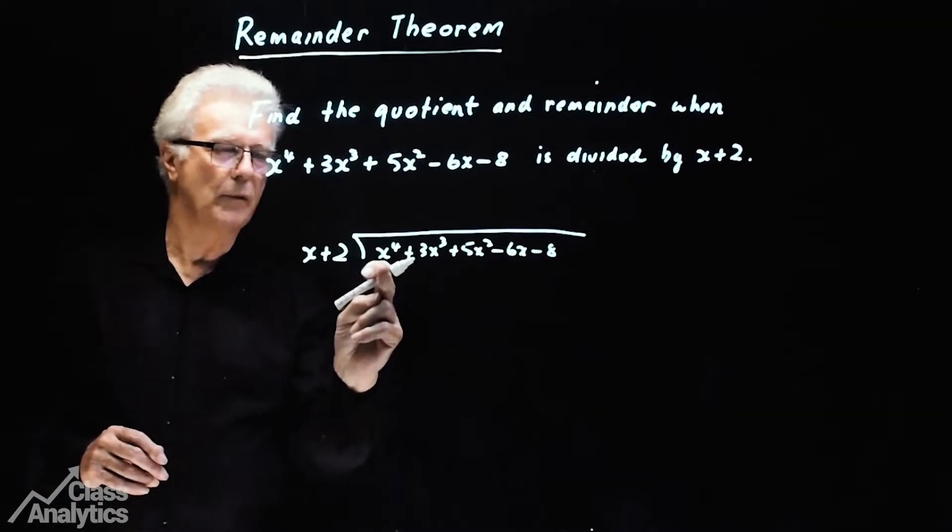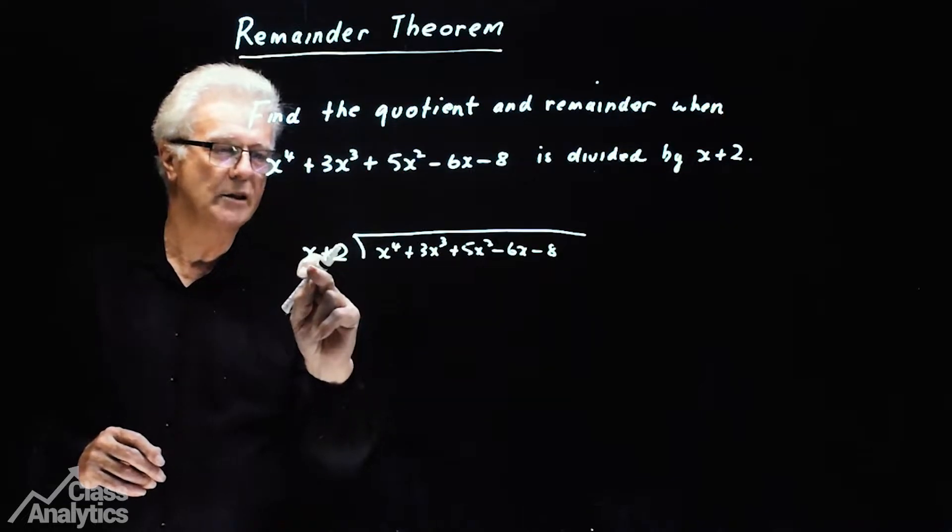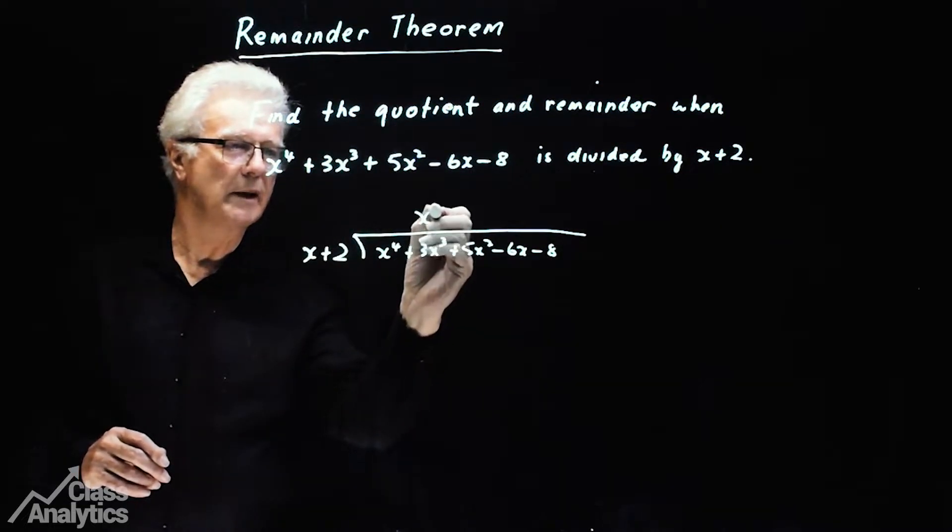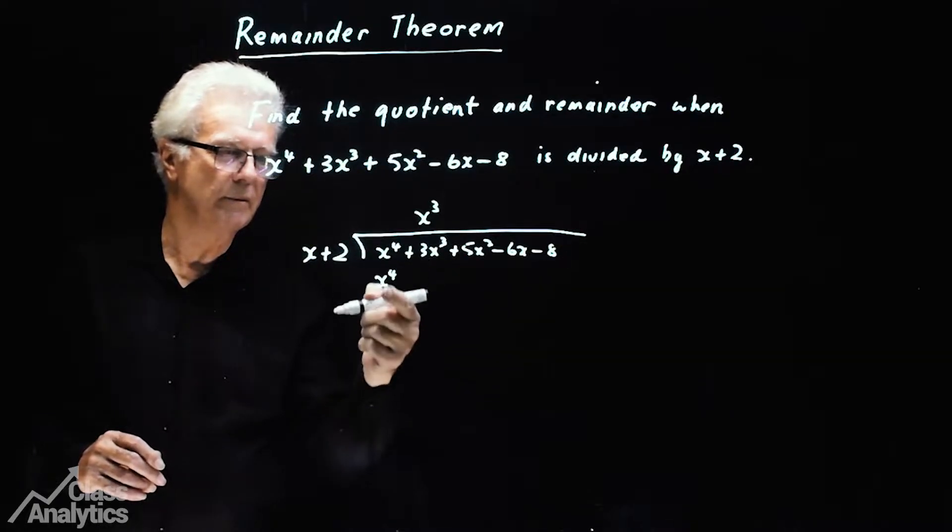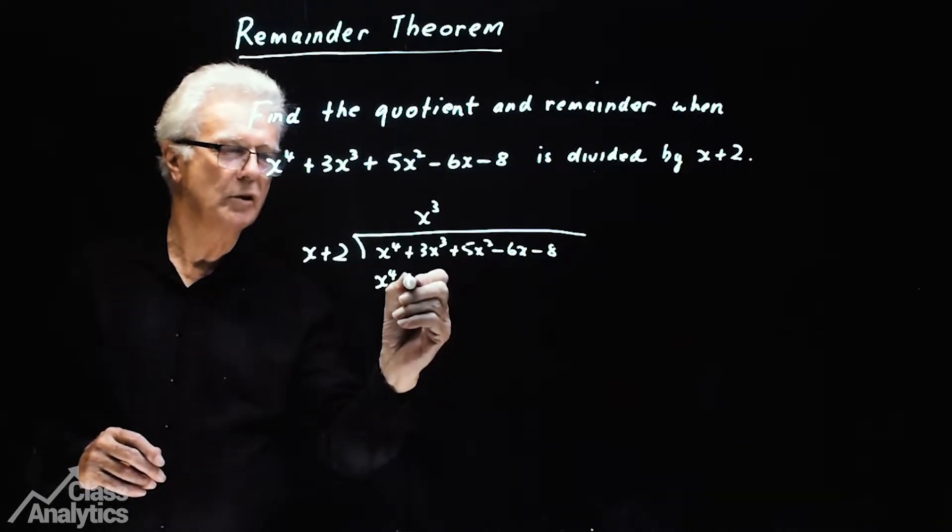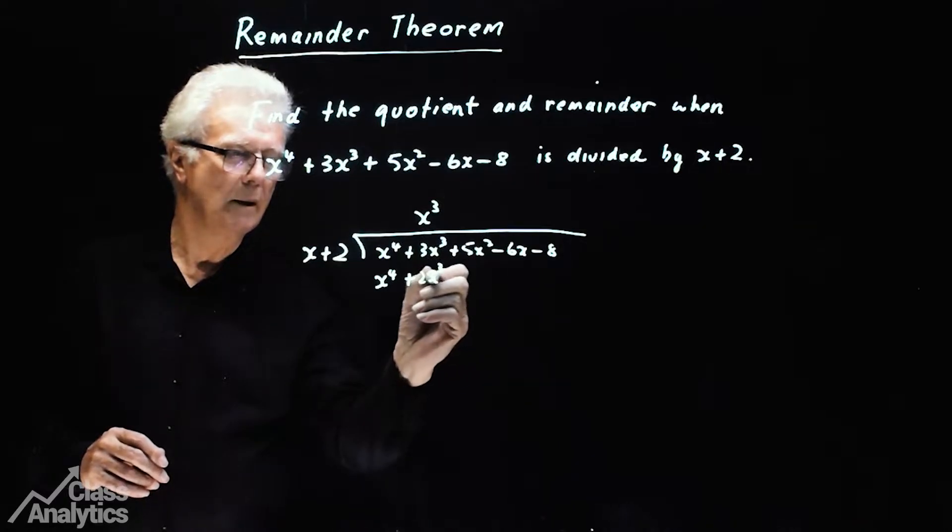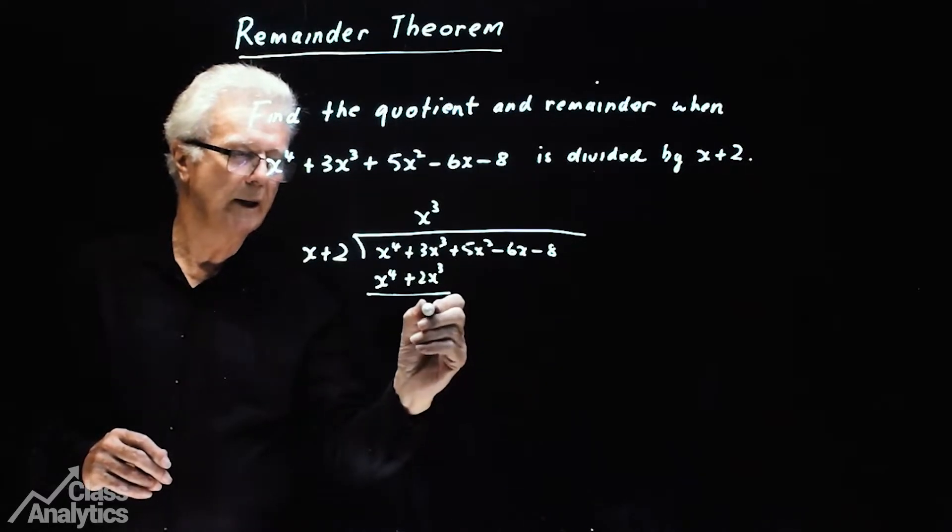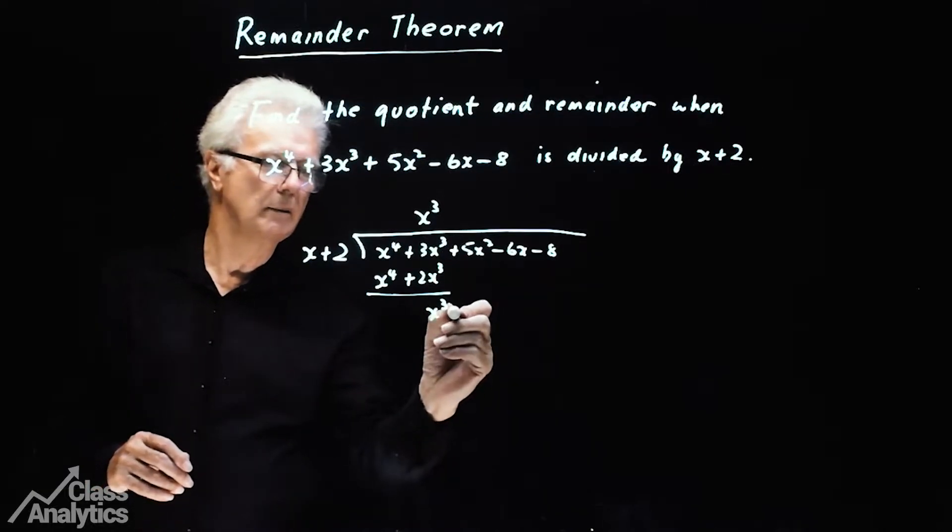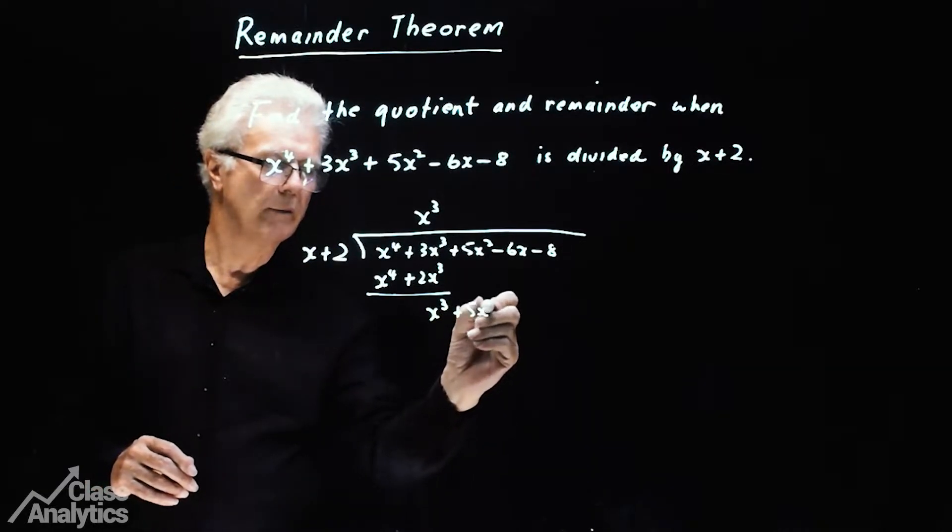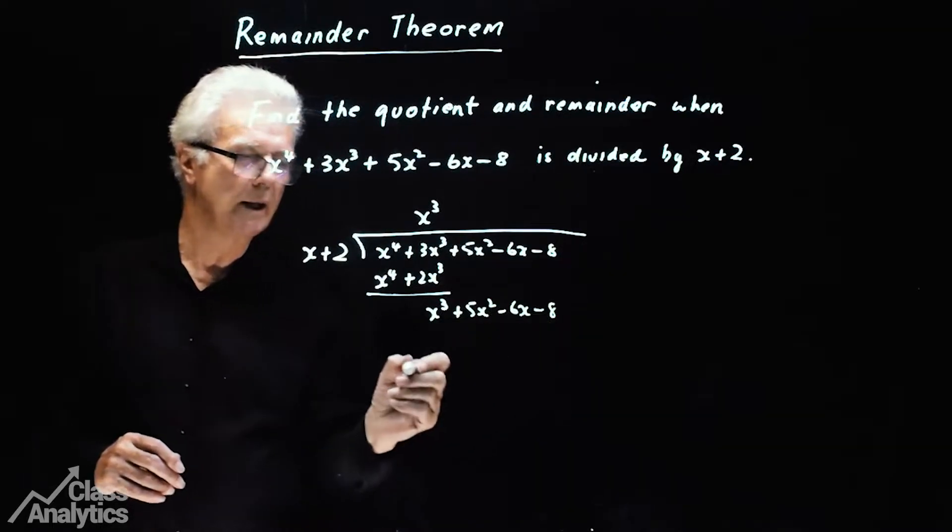So we're dividing an x to the 4th, so I'll have to multiply this one by x cubed. So it becomes x cubed at the top, x to the 4th, so they'll line up and subtract, plus 2x cubed. So subtract that, we're going to get an x cubed. Now I'll bring all these ones down, we're going to get plus 5x squared minus 6x minus 8.